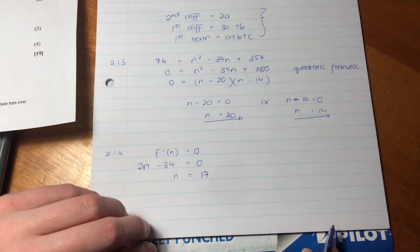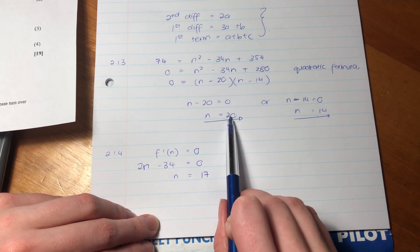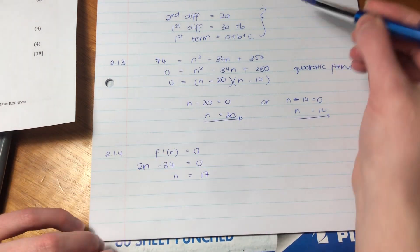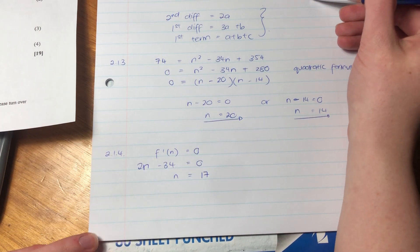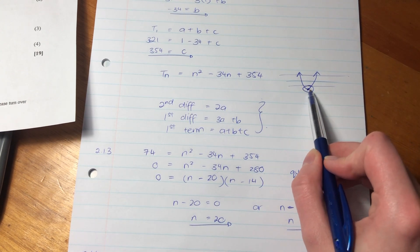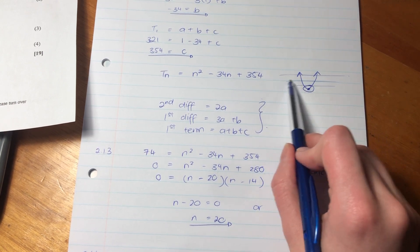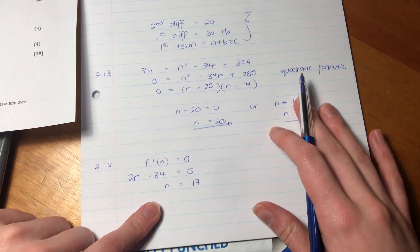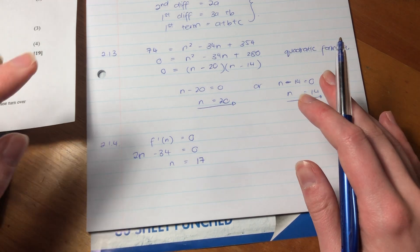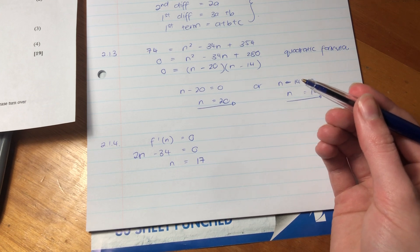So there's two ways of finding the turning point. You can either get the derivative. So you can say, if f dash of n equals zero. So remember that f little dash means derivative. So the derivative of this here is going to be 2n minus 34 is going to equal zero. So then n equals 17. We would expect that. And you might be like, oh yeah, whatever. But we would expect that because we see that n equals 20 and n equals 14. They both equal 74. So we know that the turning point kind of has to be right in the middle of those two in order to get that property that I spoke of.